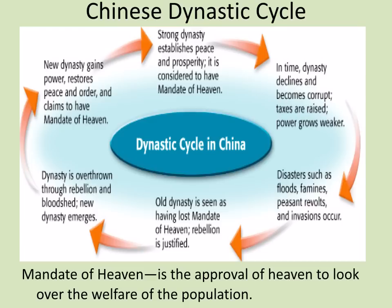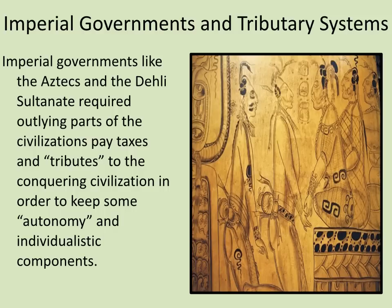This explains every single empire that has ever existed. Keep in mind: the mandate of heaven is the approval of heaven to look over the welfare of the population. It doesn't mean you can rule until the last member of your family dies — it's saying you have the ability to rule now, but it's not guaranteed if you don't do what you're supposed to. Imperial governments like the Aztecs and the Delhi Sultanate use a tributary system because their empires are so vast — they tax their newly conquered land, giving it a little bit of autonomy. This tributary system becomes very popular among European and African nations.